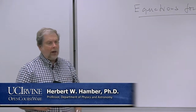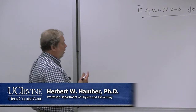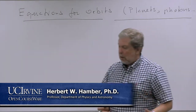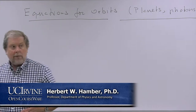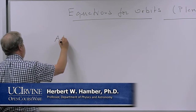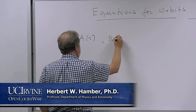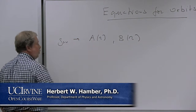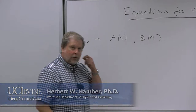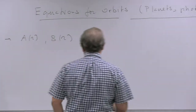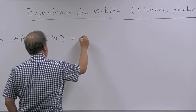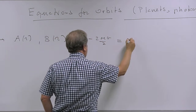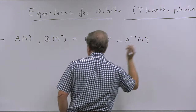Continuing where we left last lecture, we were talking about the equations for the orbits. We do have the metric, described by functions a(r) and b(r) — that is what is left of g_mu_nu. In the case of the Schwarzschild solution, they're inversely related: b(r) = 1 - 2MG/r = a^{-1}(r).